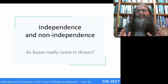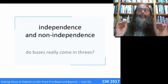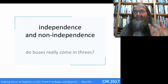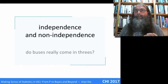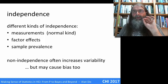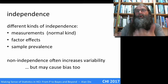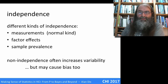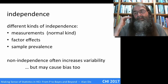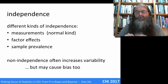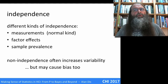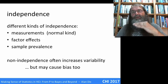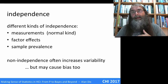Another key word in statistics is independence, but it actually has multiple meanings, so you have to talk about several meanings of independence. I'm listing them here but we're going to talk about them — independence of measurement, which is probably the most common use of the word, but also two other things about factor effects and sample prevalence.